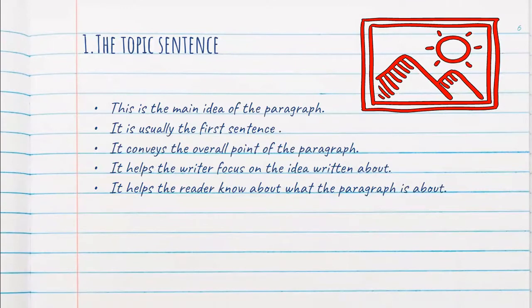What is the topic sentence? The topic sentence is the main idea of the paragraph. It is the first sentence of the paragraph and it conveys the overall point — what the paragraph is about. It helps the writer focus on the idea they have to write about, and it helps the reader know what the paragraph is about.